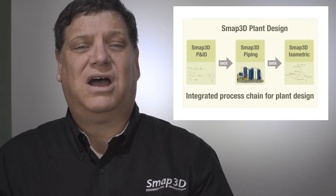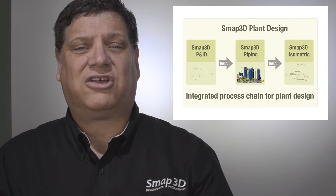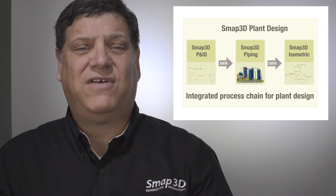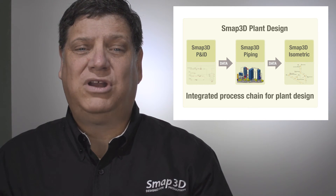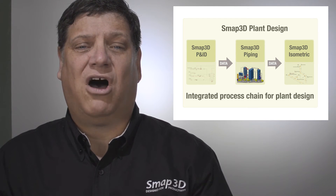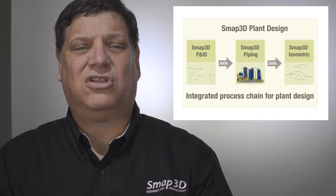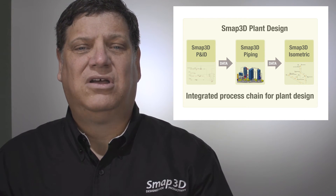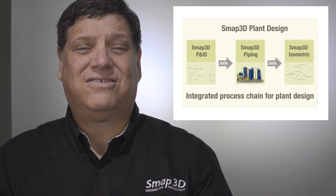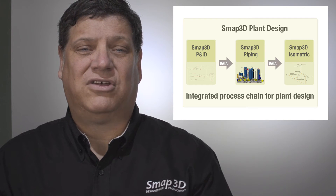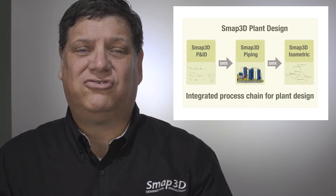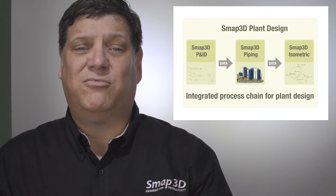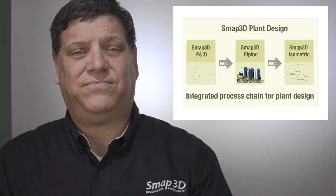SMAT 3D isometric exports all available information from the 3D pipelines and automatically creates a single-line isometric drawing. We license Isogen for this, so if you're familiar with Isogen, you're familiar with our isometric drawings.